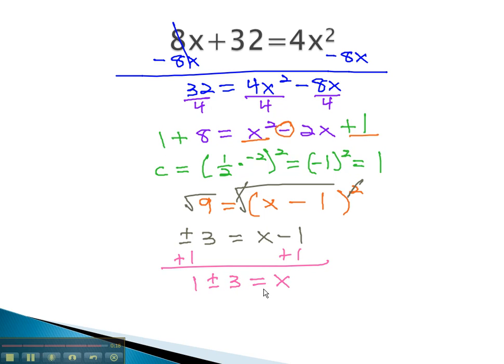We can show both of these answers by doing the plus and the minus. 1 plus 3 is 4, and 1 minus 3 is negative 2. Our solutions for x are 4 and negative 2.